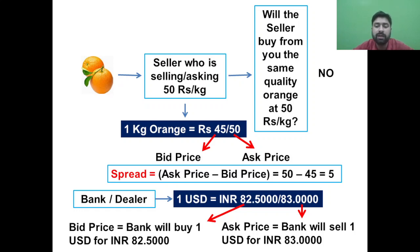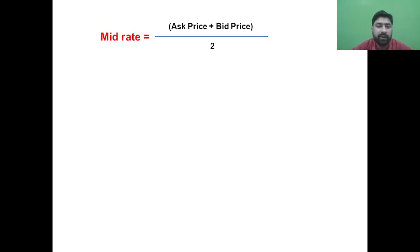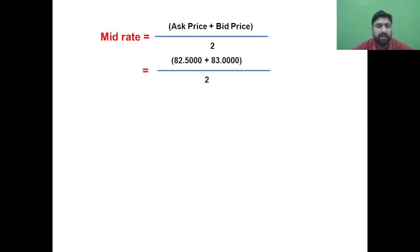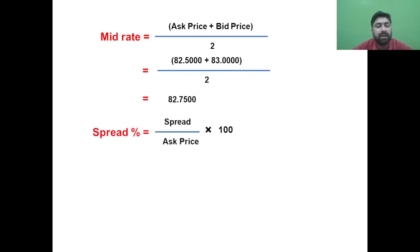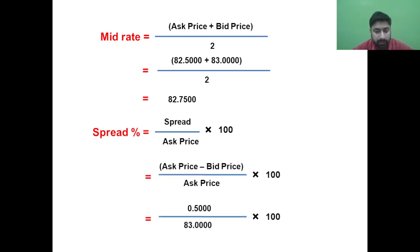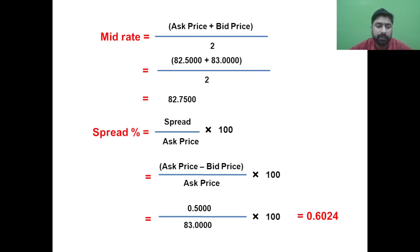There are certain formulas used in bid-ask spread analysis. First: Spread = Ask Price − Bid Price. Second: Mid Rate = (Ask Price + Bid Price) / 2, which is the average price. In our example, the mid rate = (82.500 + 83.000) / 2 = 82.7500. Third: Spread Percentage = (Spread / Ask Price) × 100 = (Ask − Bid) / Ask × 100, which gives 0.6024% in this example. With this, I complete this lecture. If you have any doubts, please let me know through your comments. Thank you.